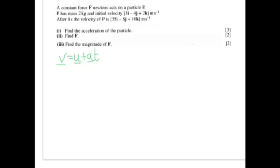The final velocity, we're told, after 4 seconds, V is 35i minus 8j plus 10k. And that's equal to the initial velocity, which we're told is 3i minus 4j plus 2k, plus the time, which is 4 seconds, times acceleration. So just changing that around, we can say that 4a is equal to, in terms of i's, it's 35 minus 3, which is 32. And in terms of j's, it's minus 8, minus minus 4, which is negative 4.